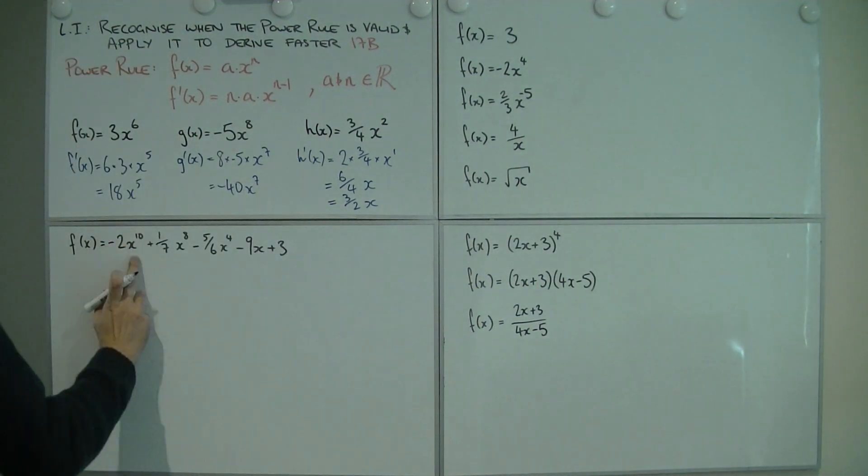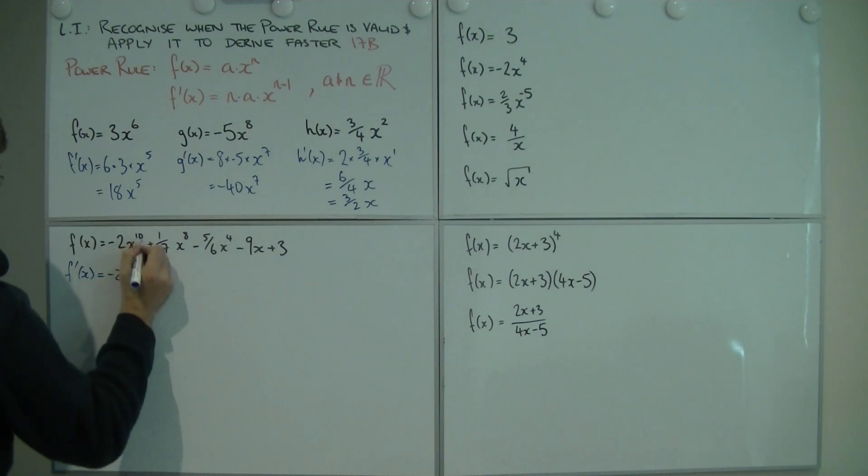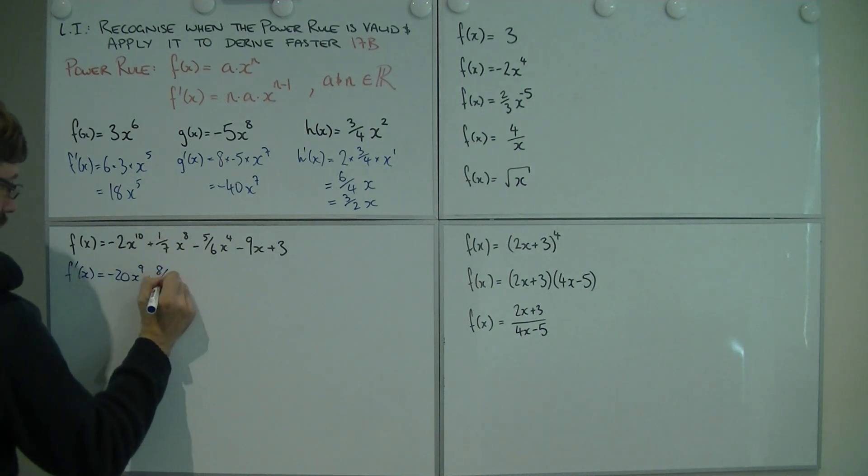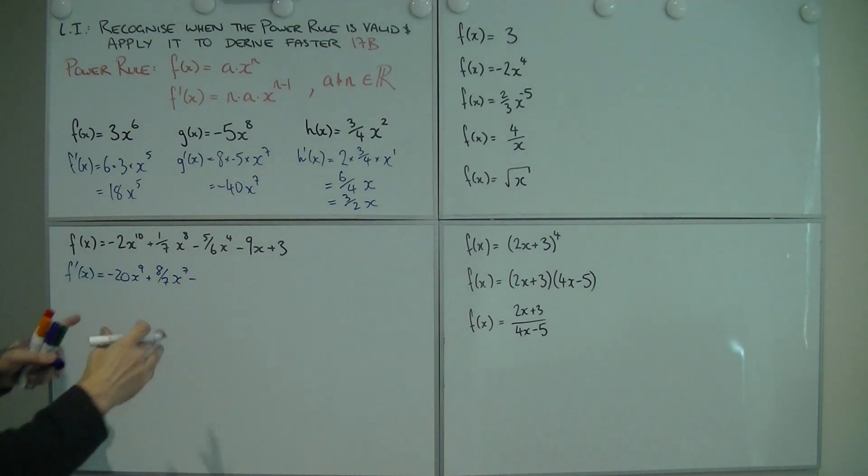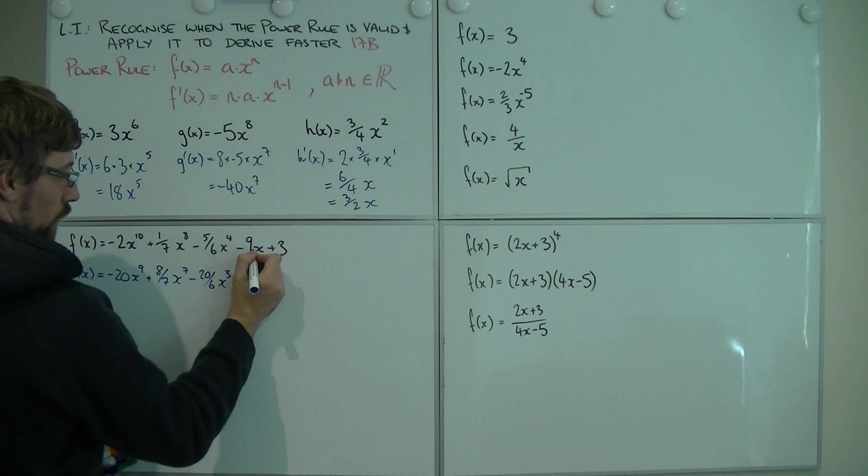So going through bit by bit. This guy, we take a look at it. F prime of x is - 10 comes down the front, multiplies by the negative 2 to give negative 20. Power comes down by 1. Plus, this comes onto that. So I've got 8 on 7. Power drops by 1. This multiplies onto this. We'll worry about simplifying last because we've already got a chunky boy. So 20 on 6.